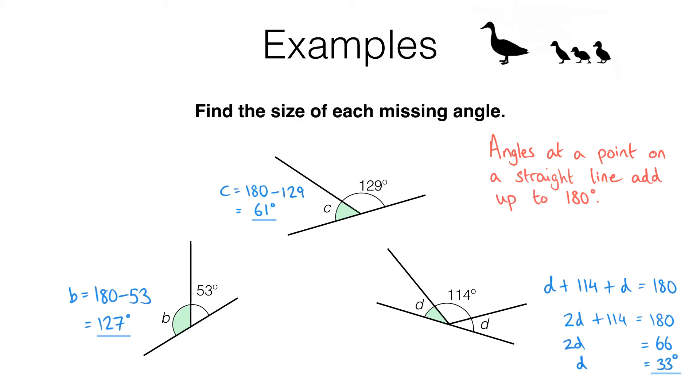We can check our answer. What we're saying is that this angle here is 33 degrees and we're saying that this one is also 33 degrees because it's also D. And all we have to do now is check that 33 plus 114 plus 33 does add up to 180. And if you check it you'll see that it does. So we know we've got this correct.